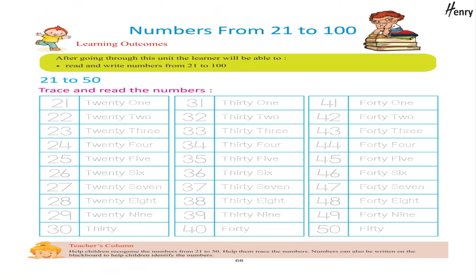Numbers from 21 to 100 — Learning Outcomes: After going through this unit, the learner will be able to read and write numbers from 21 to 100.